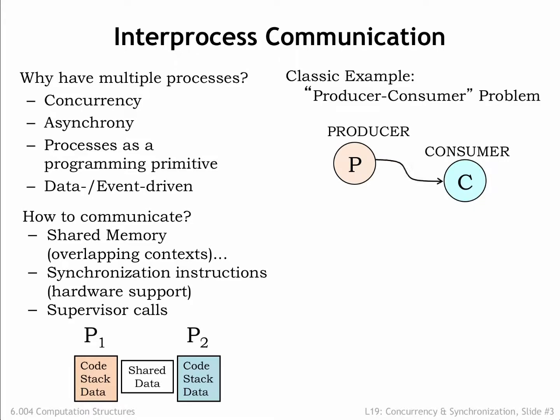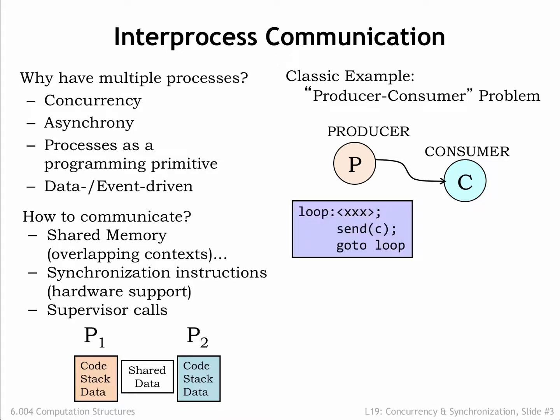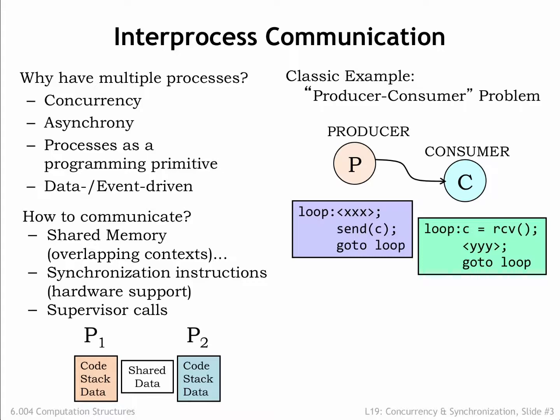In this lecture, we'll use the classic producer-consumer problem as our example of concurrent processes that need to communicate and synchronize. There are two processes: a producer and a consumer. The producer is running in a loop which performs some computation to generate information — in this case a single character. The consumer is also running in a loop which waits for the next character to arrive from the producer, then performs some computation.